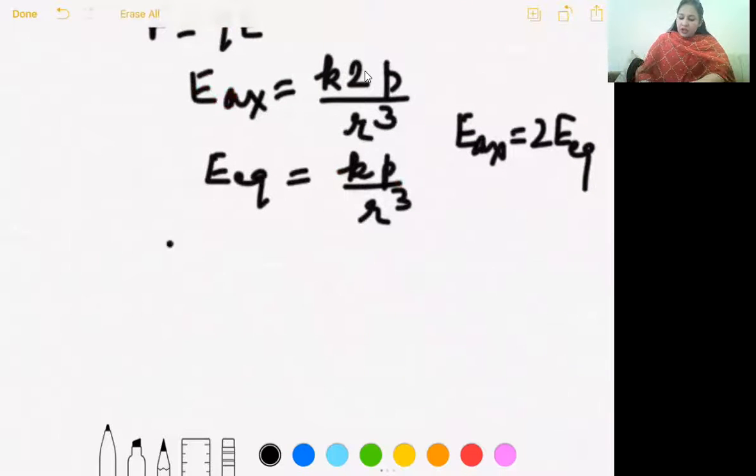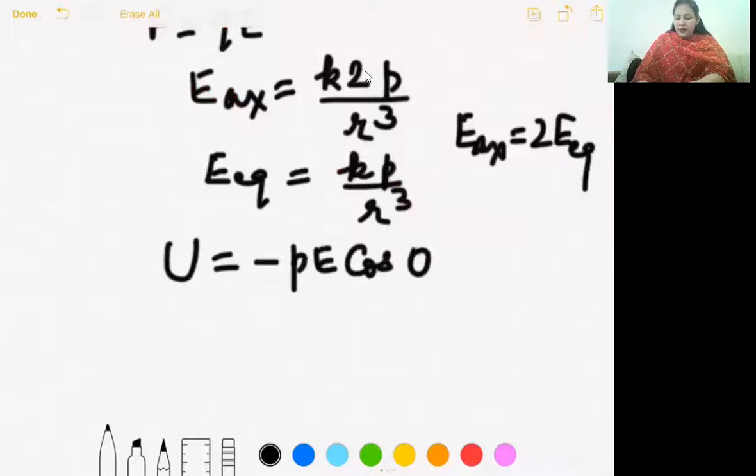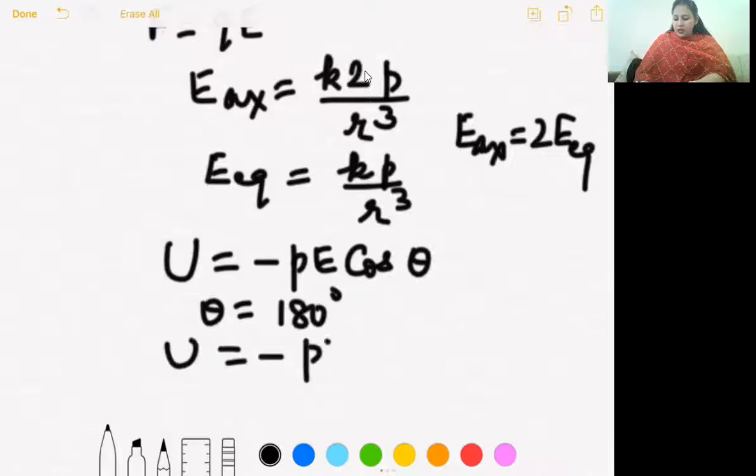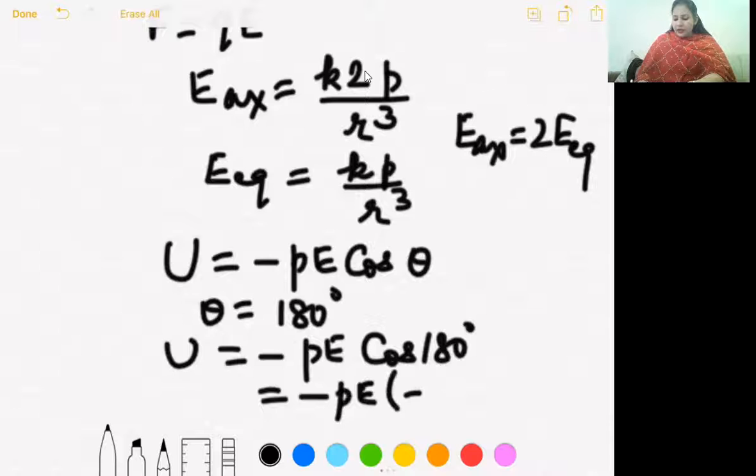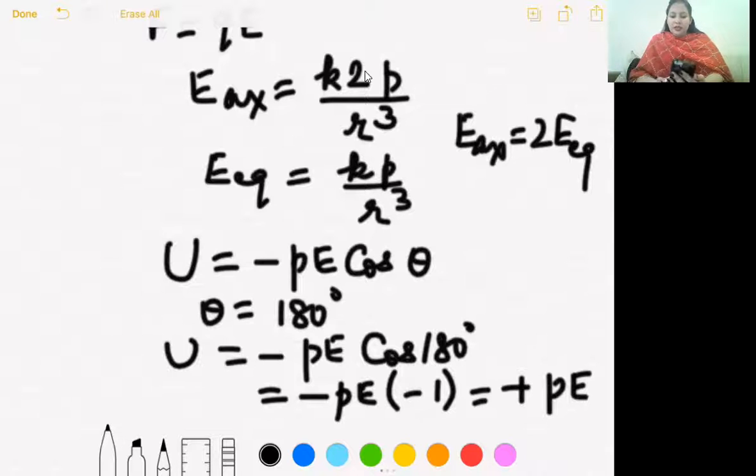Potential energy of an electric dipole placed in uniform electric field is maximum for an orientation of 180 degree. We can explain: minus pE cos 180, cos 180 is minus one, so potential energy becomes maximum, highly unstable state. For what orientation does this happen? For 180 degree orientation. These were all the MCQs, now let's discuss the theory part.